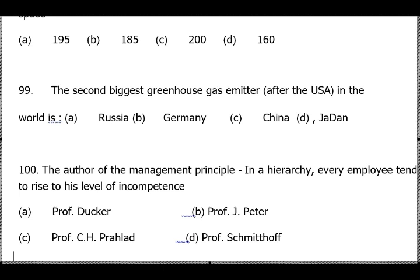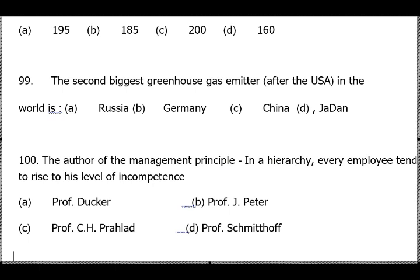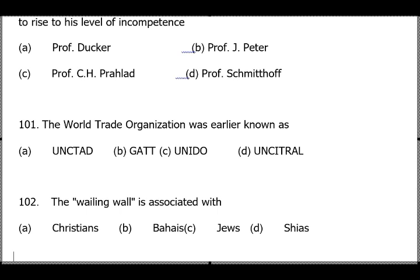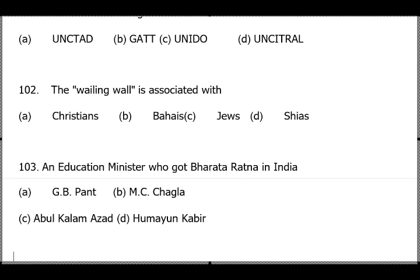Question 100: The management principle about hierarchy where every employee tends to rise to their level of incompetence — answer is Professor Lawrence J. Peter (the Peter Principle) — option B. Question 101: Which organization was earlier known as GATT (General Agreement on Tariffs and Trade)? During the Marrakesh Treaty it became the World Trade Organization.